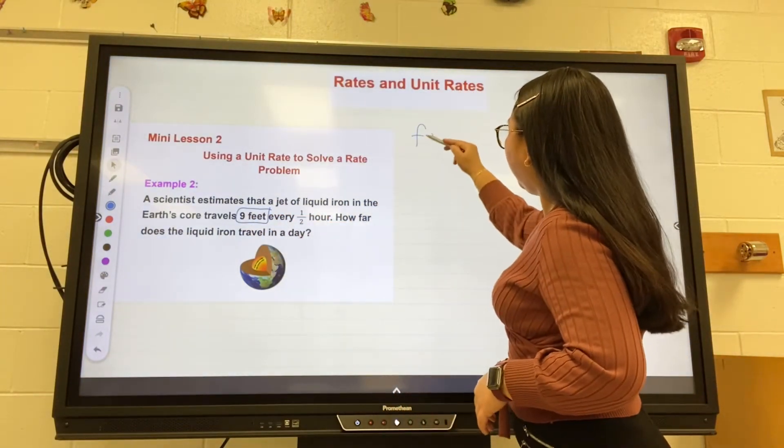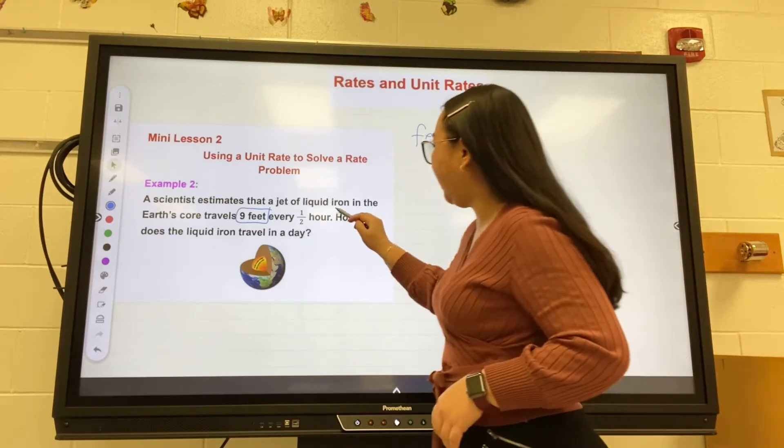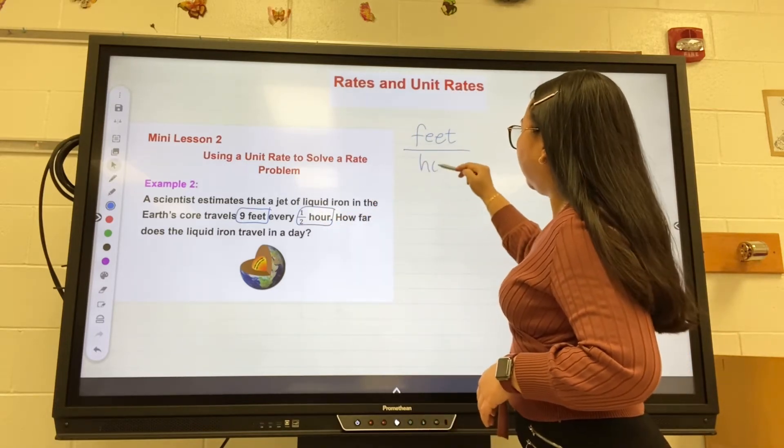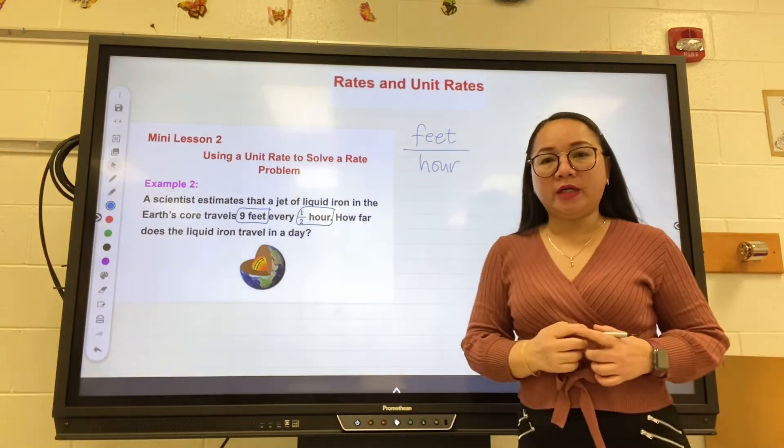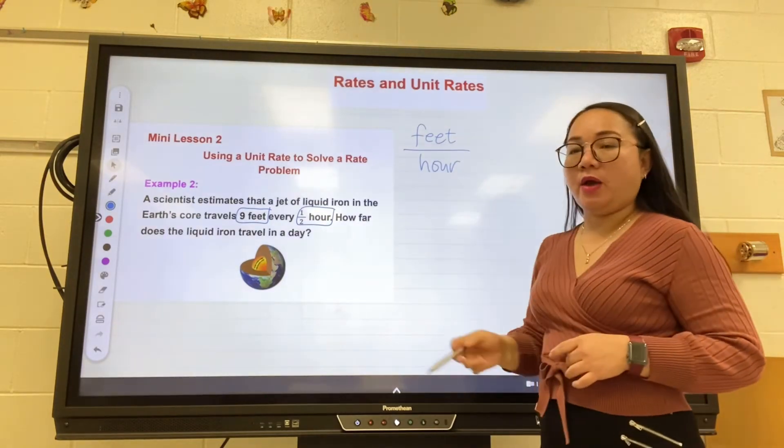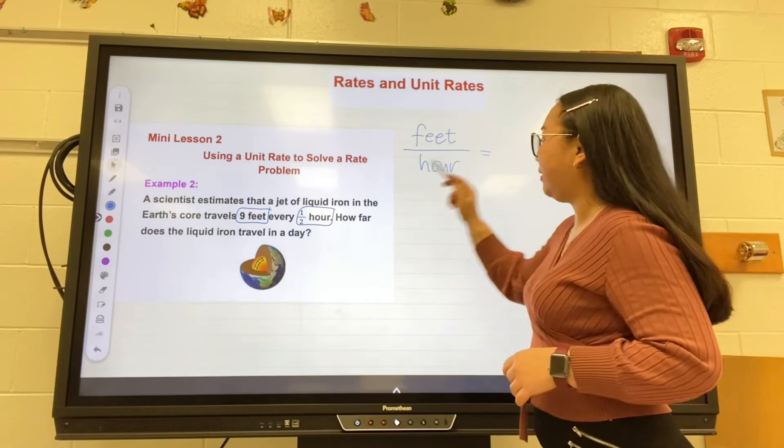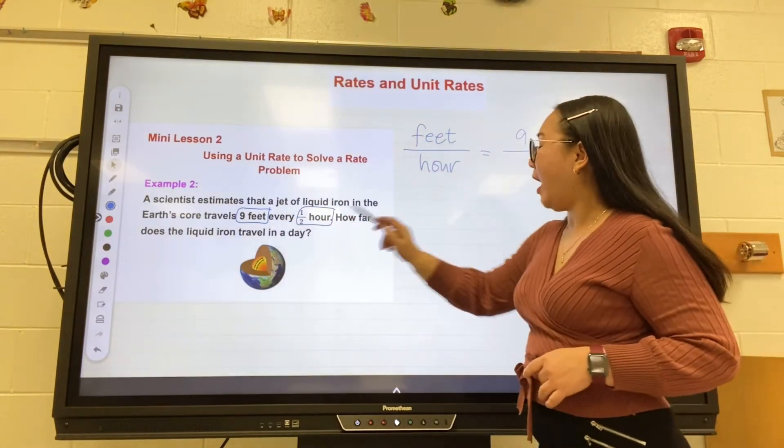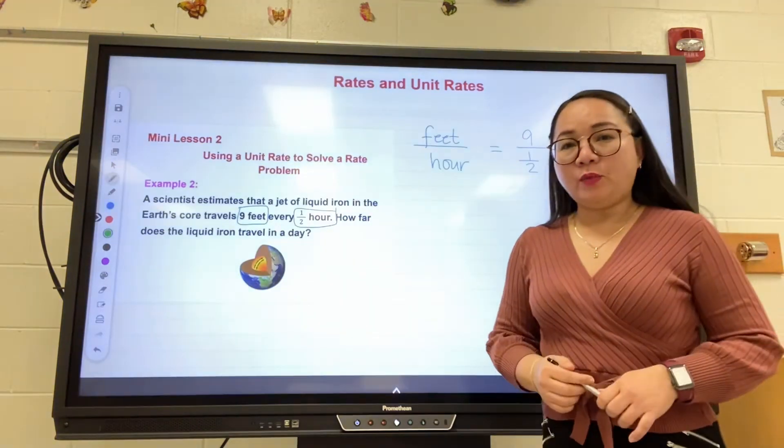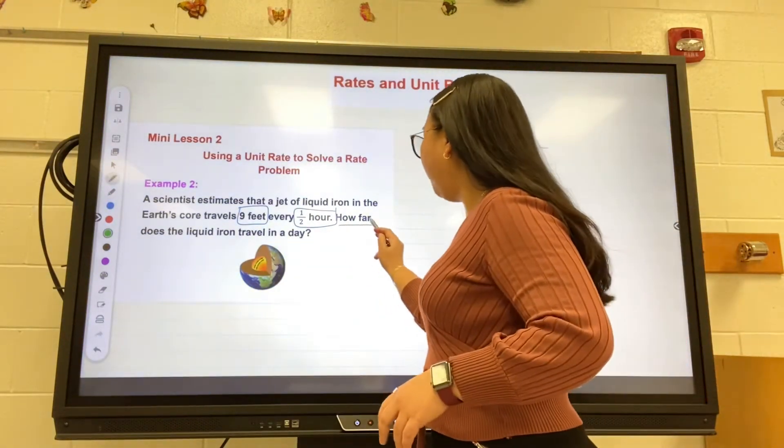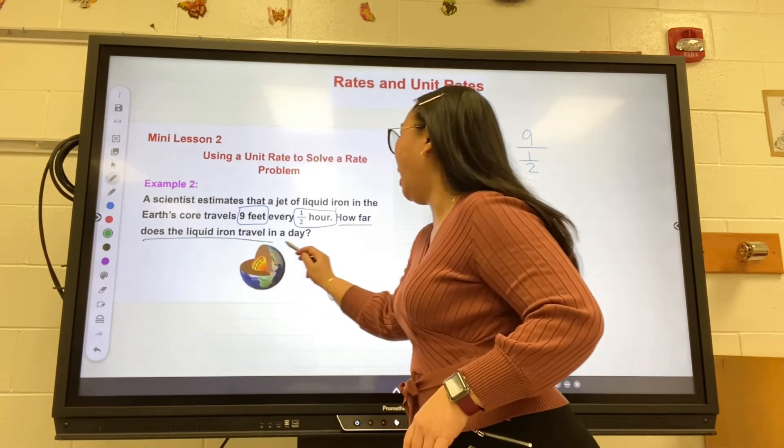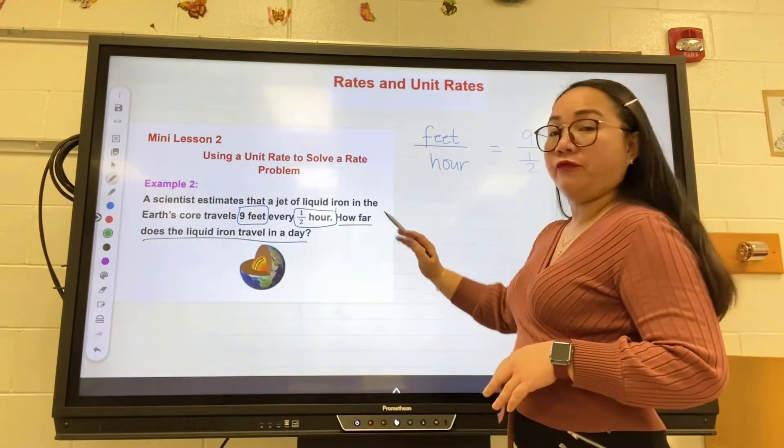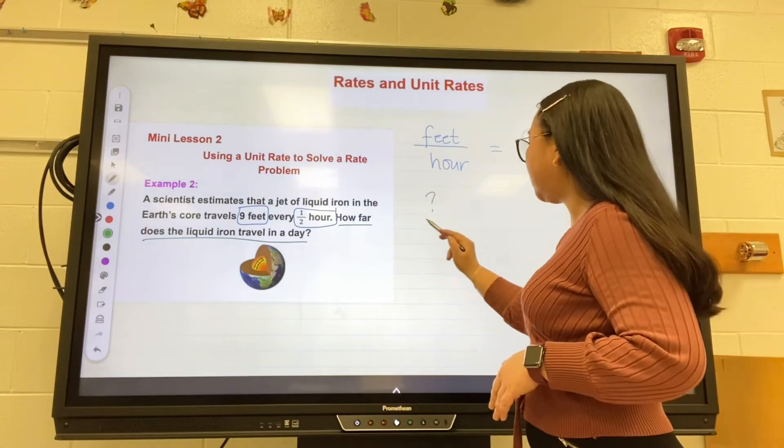First, write the ratio. The first one is nine feet, so write down feet. Then the other one is one-half hour, so the quantities compared here are feet and hours. We know there are nine feet, so write down nine, and then half an hour. Now answer the question: How far does the liquid iron travel in a day? We do not know how far, so that is a question mark per day - per one day.